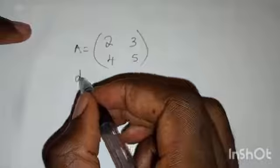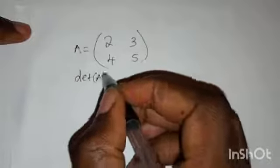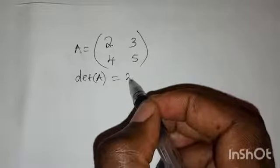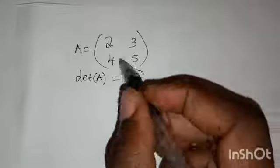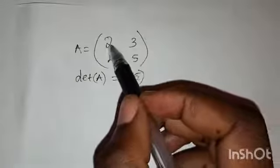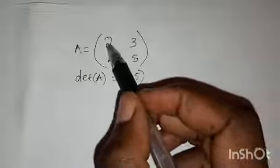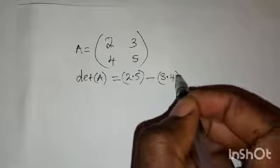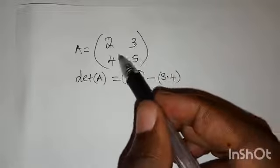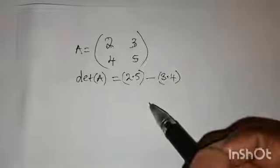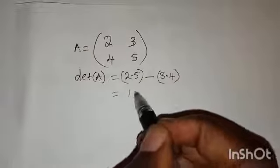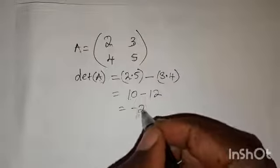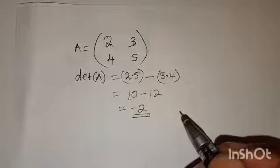To find the determinant of matrix A, you multiply 2 times 5 — this is called the major diagonal. Then minus 3 times 4 — these are the numbers in the minor diagonal. So 2 times 5 is 10, minus 3 times 4 is 12. 10 minus 12 is negative 2. So this is the determinant.